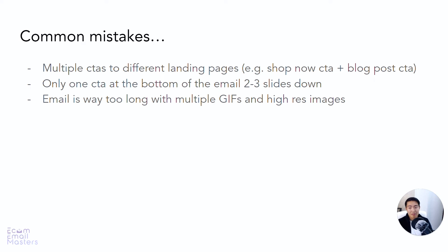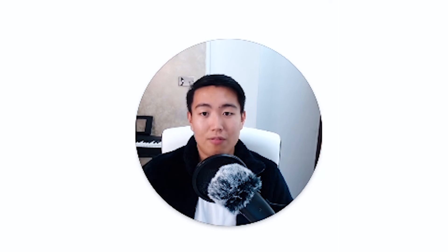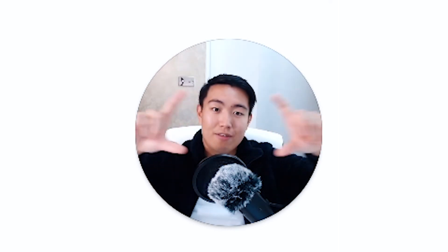Now let's cover some common mistakes. There are three I see brands making when I audit their email campaigns. Number one is having multiple call to actions pointing to different landing pages — for example, a 'shop now' CTA to a collections page and then another CTA to a blog post. This is slightly confusing messaging. The only exception is if you're showcasing a collection of three to four products and driving traffic to individual product landing pages — that still counts as a single unified call to action.